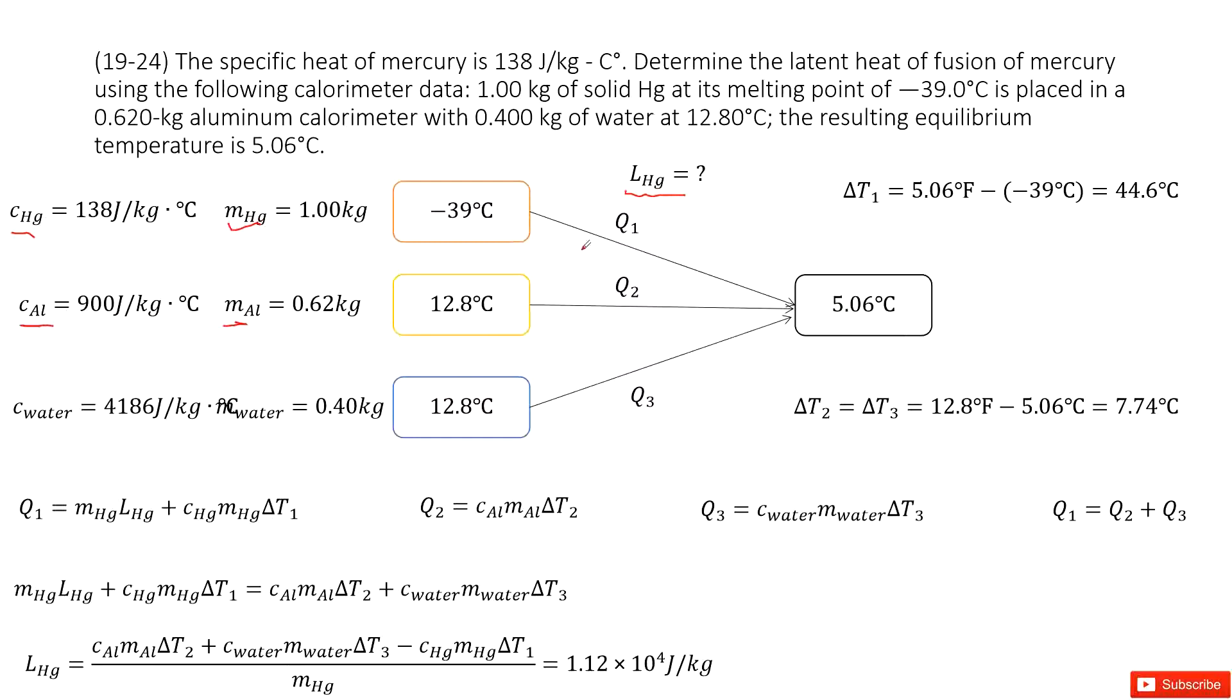And we can consider the energy is conserved in this system. So you can see the energy released by the mercury just equals the energy absorbed by the aluminum and water.